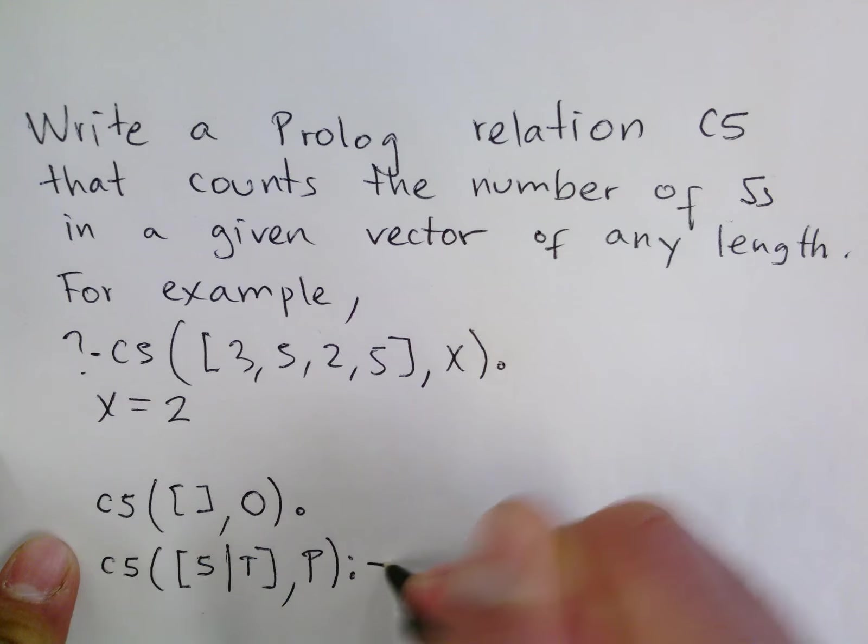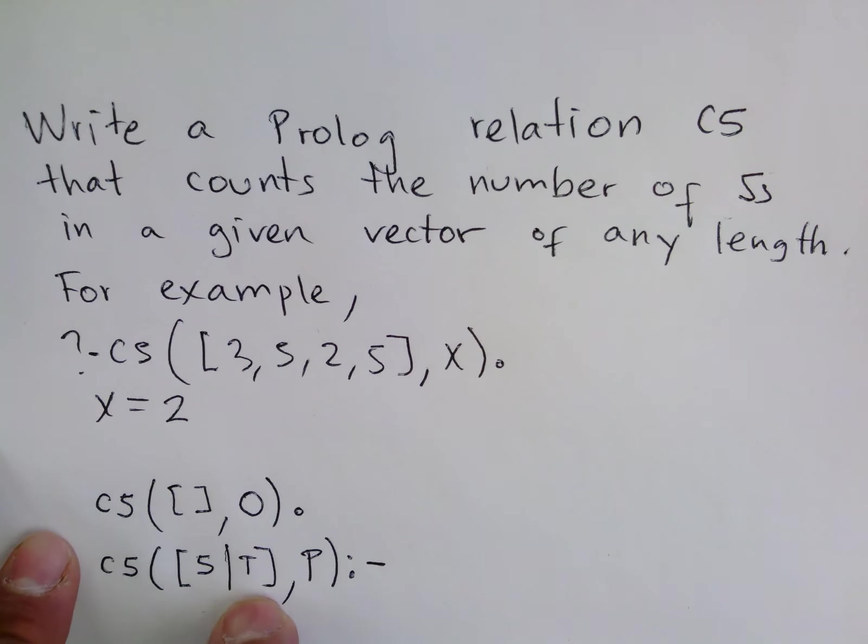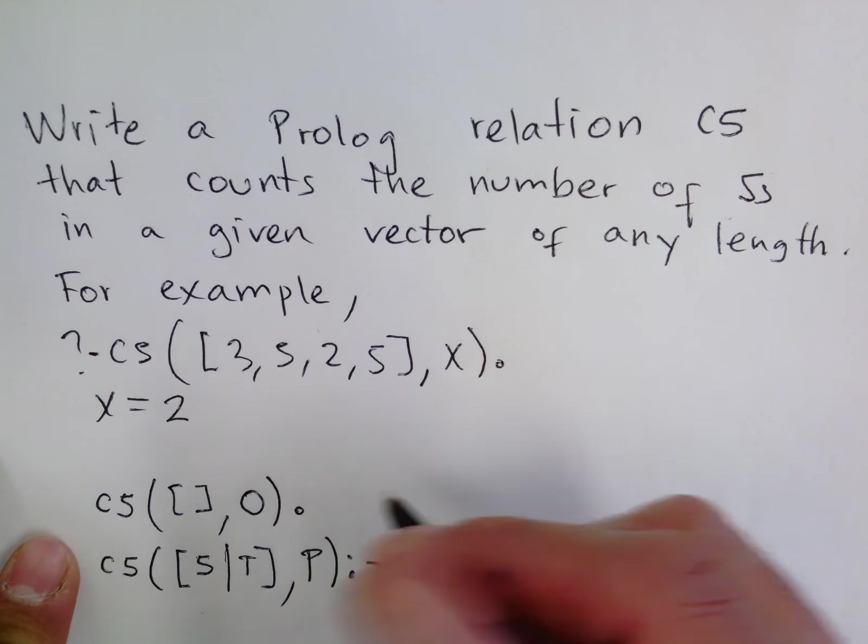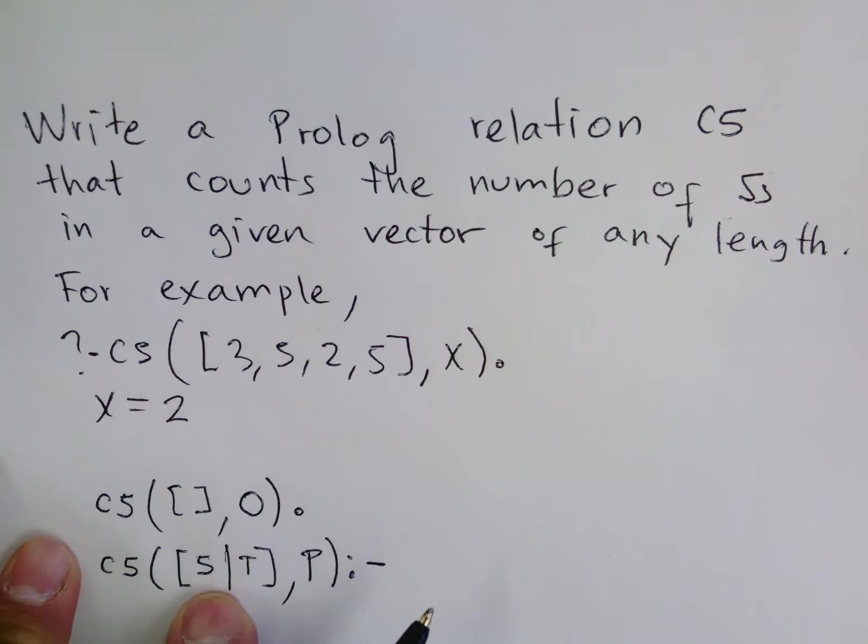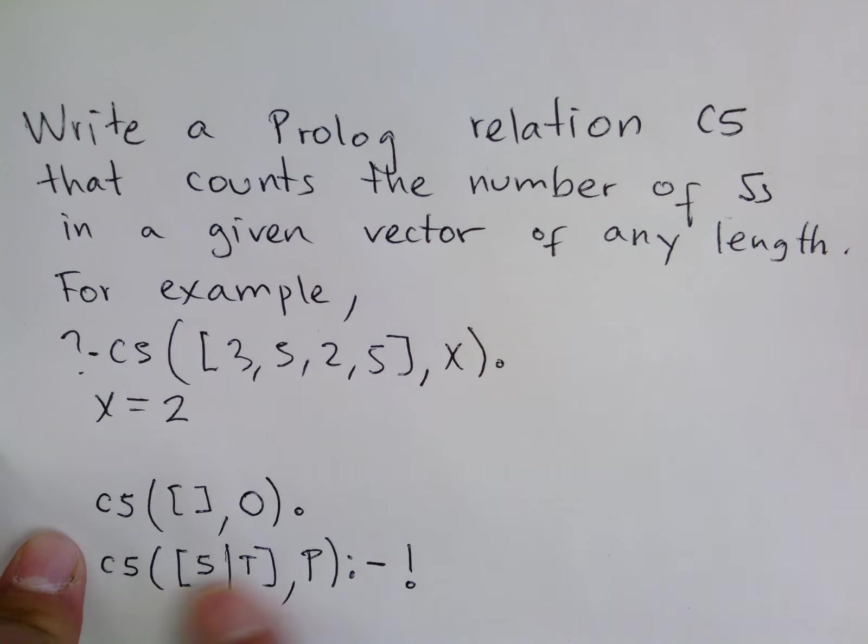Then what I will say is that I want to know how many 5s are in T. What we need to say here is first I don't want to backtrack and skip this option, because if we backtrack I am going to be able not to count this 5. So when I say cut, stop it there. This is a 5. This is the right option. Don't try to look for another option for this one.